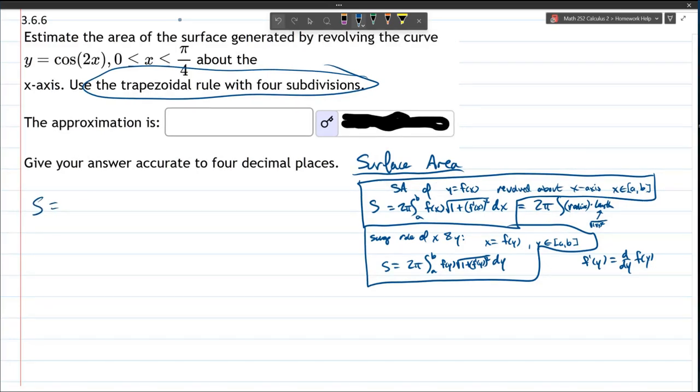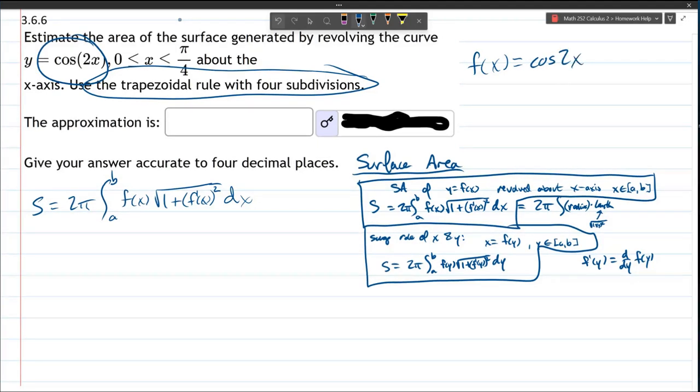So the surface area is 2π integral from a to b, f(x) square root of 1 plus f prime squared dx. So our function is right here, cos(2x).